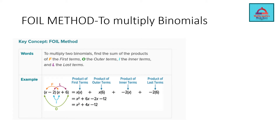Let me introduce to you the FOIL method, which is used to multiply two binomials. In words, FOIL method is stated as follows: to multiply two binomials, you first find the sum of the products of F — the first terms, O — the outer, I — the inner terms, and L — the last term.